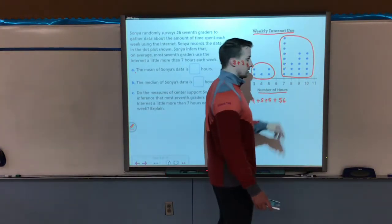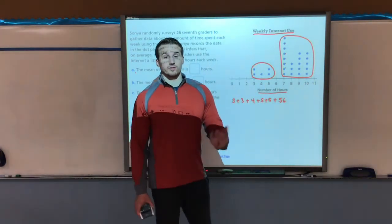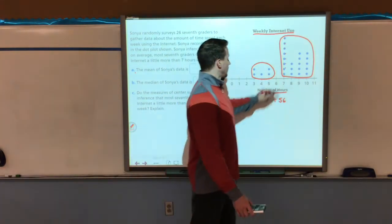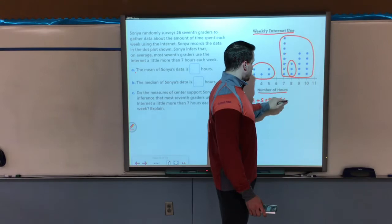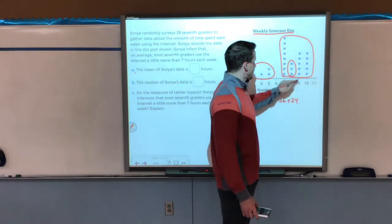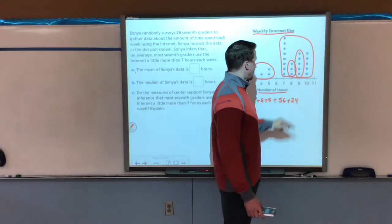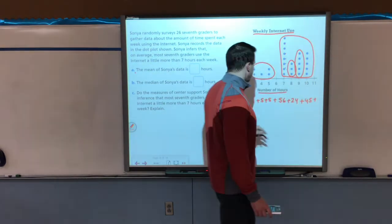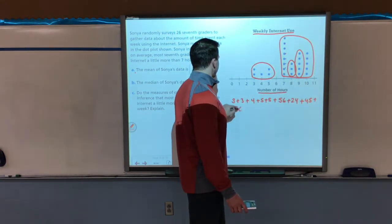I have three eights. Eight times three is 24. I have five nines. That's 45 when you multiply them together. And I have five tens, which of course is 50.